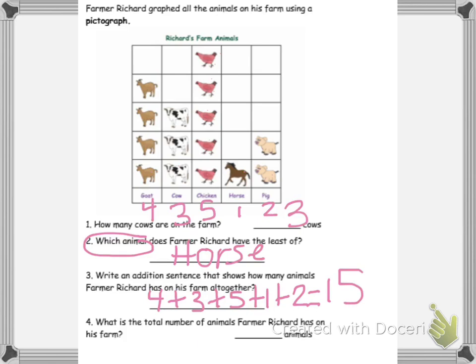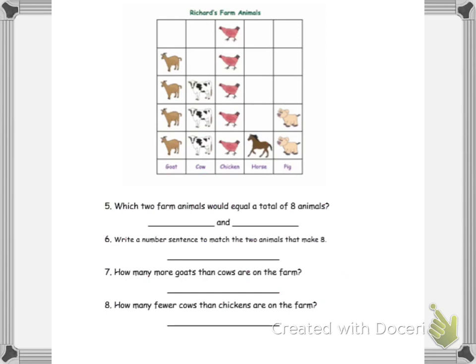All right. It says what is the total number of animals Farmer Richard has on his farm? So we know it's fifteen animals because we just made the number sentence go with it and we just added it. Now let's look at a few more questions. I'm going to write the numbers that we wrote.